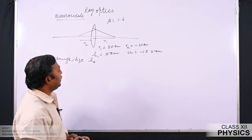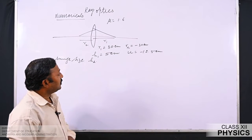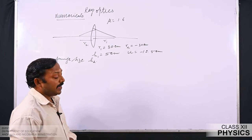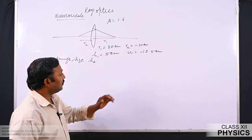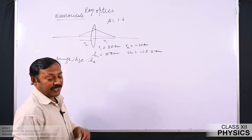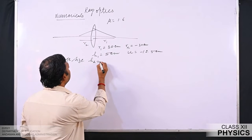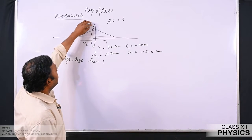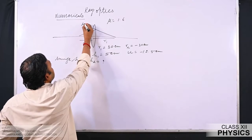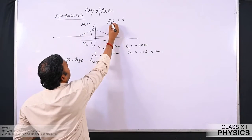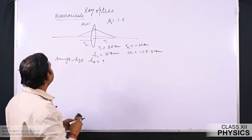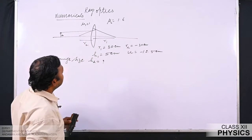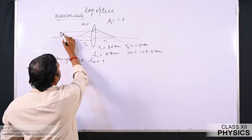To find H2 we need the magnification, which is V by U. First we find V using the lens maker's formula, then compare magnification with H2/H1. The refractive index of the rarer medium mu1 equals 1, and mu2 equals 1.6. The lens maker's formula is: 1/F = (mu2 − mu1)(1/R1 − 1/R2).